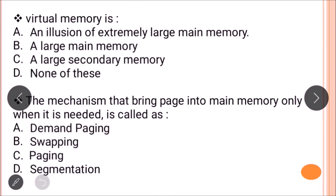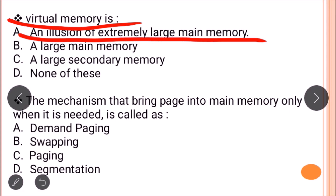The very first question is: what is virtual memory? It is an illusion of extremely large main memory. Whenever a process enters the system, it is divided into pages. Pages that need to be executed are kept in main memory, and pages not currently needed are stored in a section of the hard disk called virtual memory.